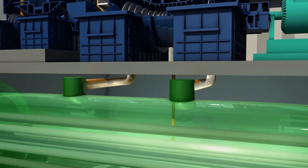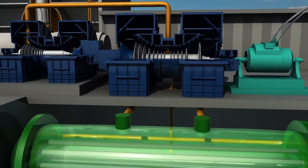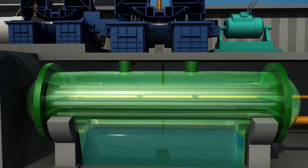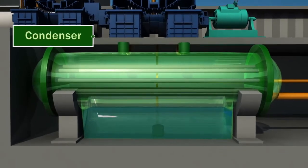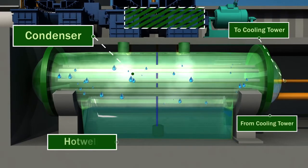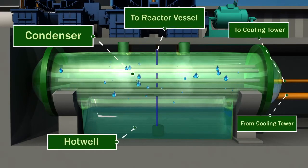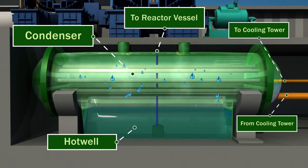In a BWR power plant, the condenser is situated below the turbines. Excess steam from the turbines is condensed and recirculated to the reactor core to heat again. This process is repeated continuously.